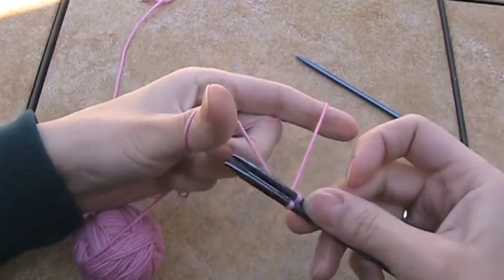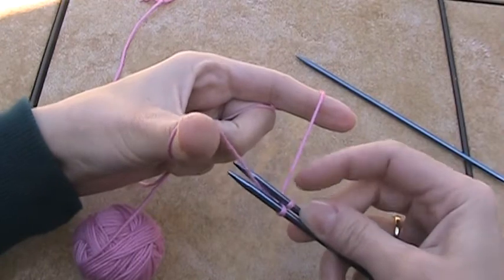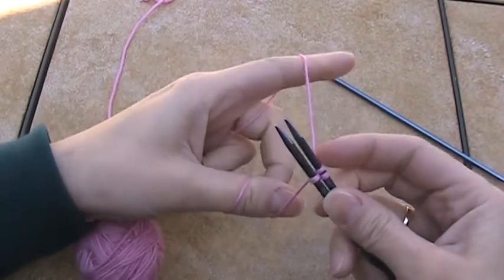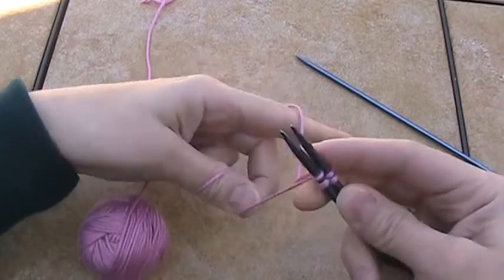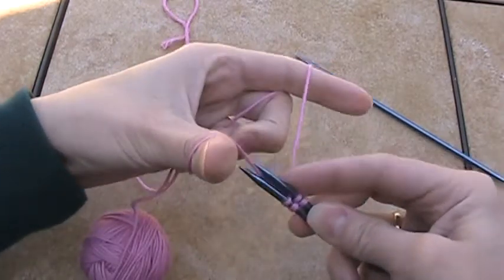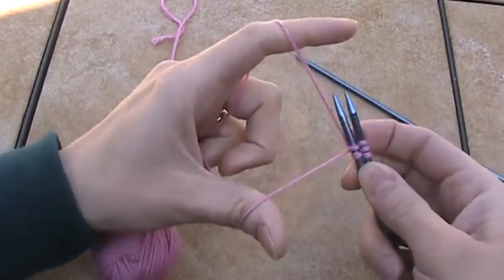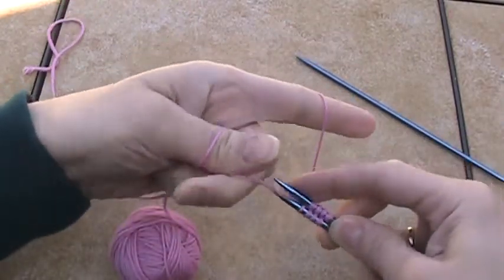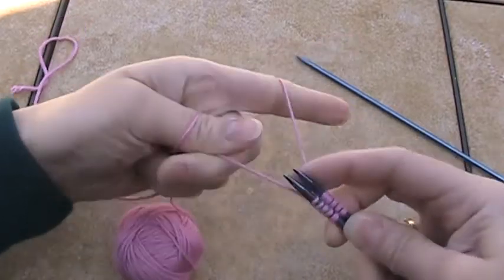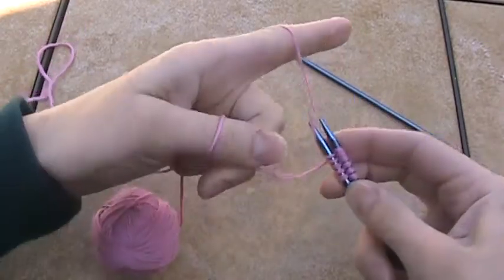To get a stitch on the back needle, take the yarn off your thumb, bring it through the middle and then over the top. So you go around the bottom and through the middle with your index finger, and then through the middle and over the top. Bottom to the middle, middle to the top, bottom to the middle, middle to the top, bottom to the middle, middle to the top, bottom to the middle.